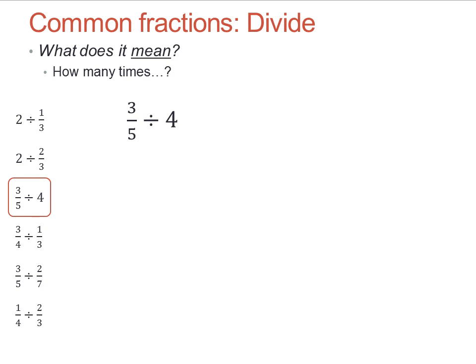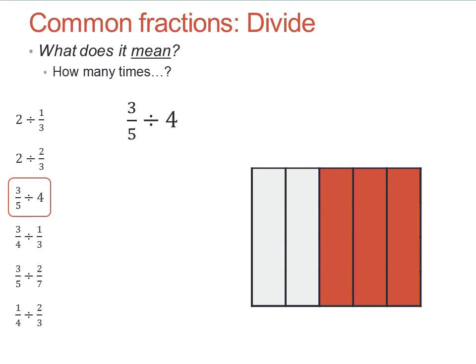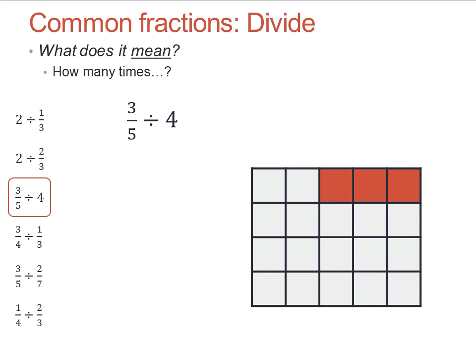Shall we try another? Three-fifths divided by four. Well, here's three-fifths. Divide that up into four. What have I got left? Three out of twenty. Three-twentieths.